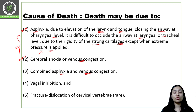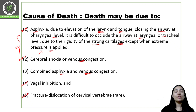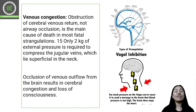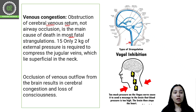Vagal inhibition is another cause of death due to pressure on the neck. Fracture or dislocation of the cervical vertebrae is a very rare cause of death in strangulation because the pressure applied is usually not enough to fracture or dislocate the cervical vertebrae. Cerebral anoxia involves obstruction of cerebral venous return — the main cause is not occlusion of the airway but venous congestion.